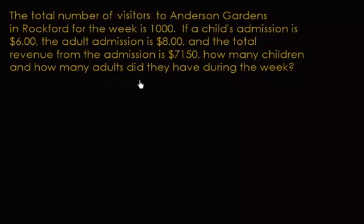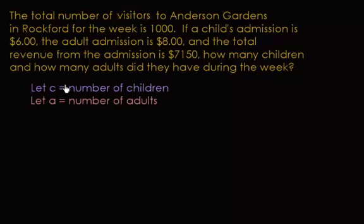There are two things we don't know and we're trying to find: how many children and how many adults. So let's label them with variables. Let C equal the number of children and A equal the number of adults. We could have used X and Y, but it's easier when C represents children and A represents adults.